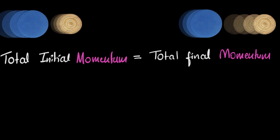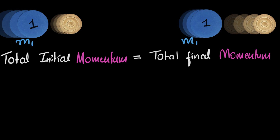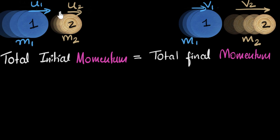Let's call the blue coin coin number one, with mass M1. Similarly, the white coin is coin number two, with mass M2. Because their velocities are changing, let's name those as well. The initial velocity of the first coin before the collision is U1, and after the collision it becomes V1. Similarly, for the white coin, before the collision its initial velocity is U2, and after the collision it becomes V2.